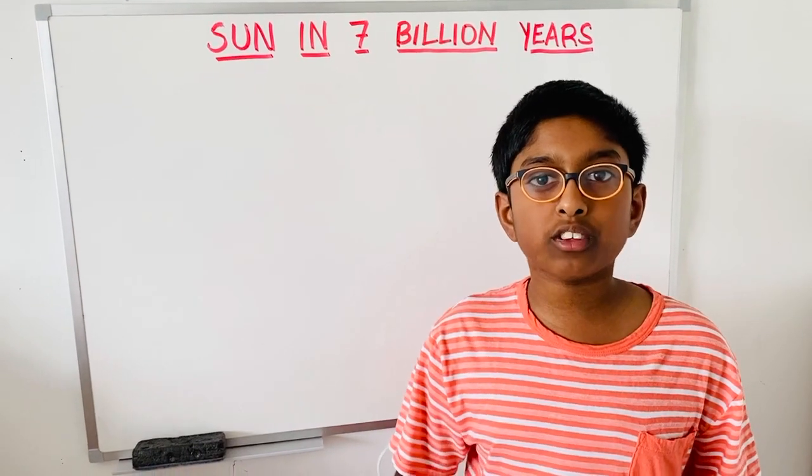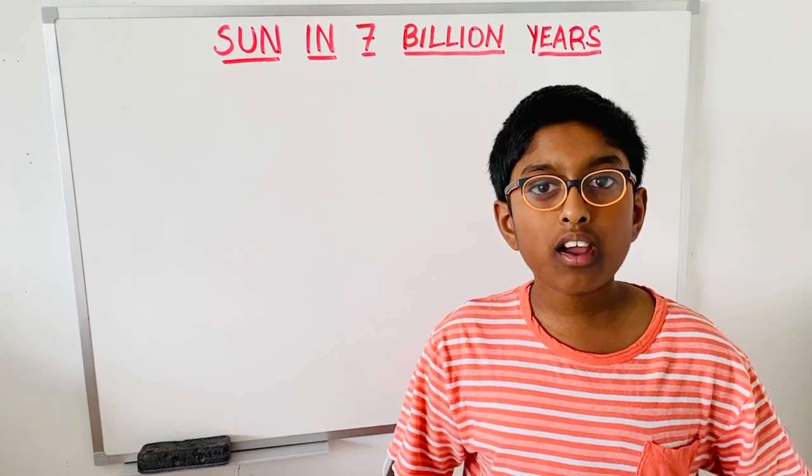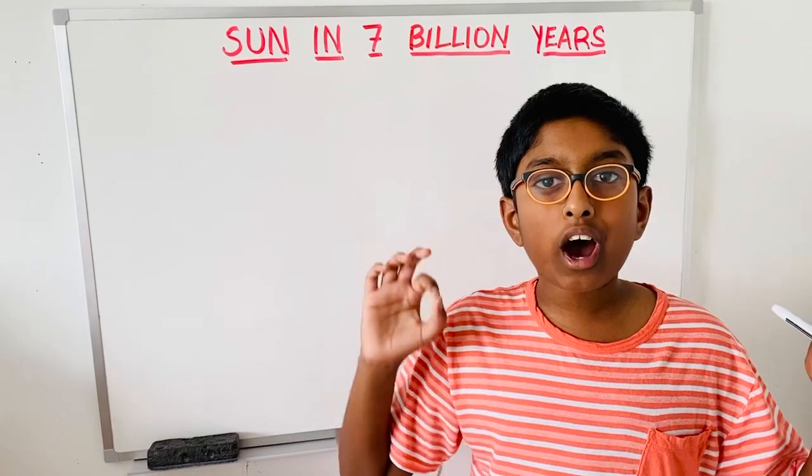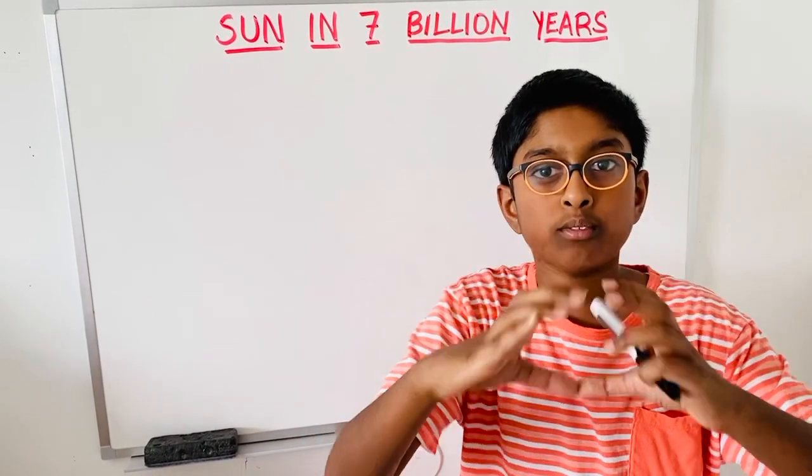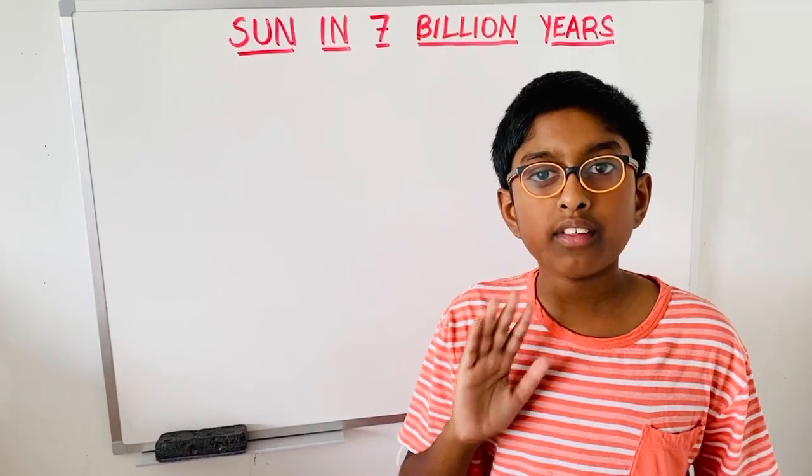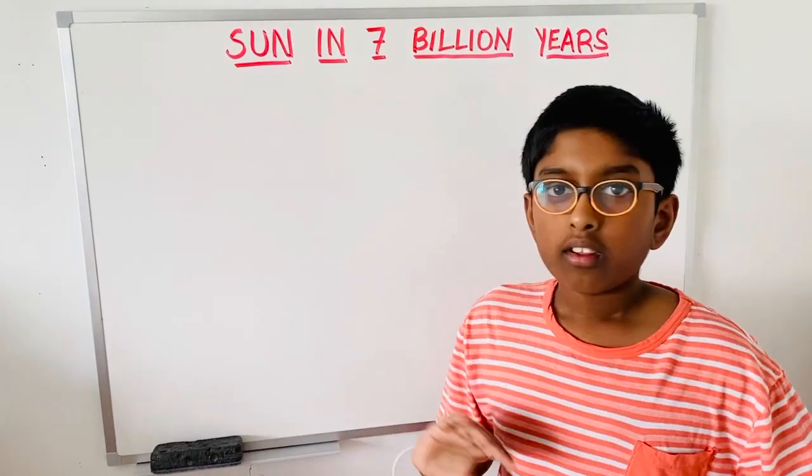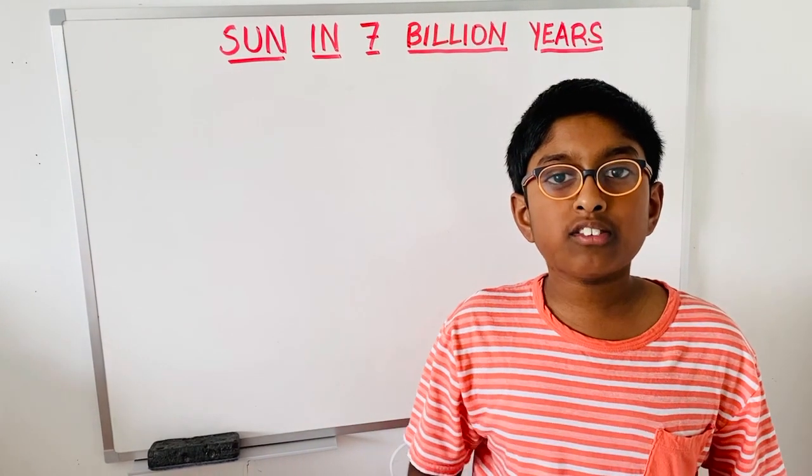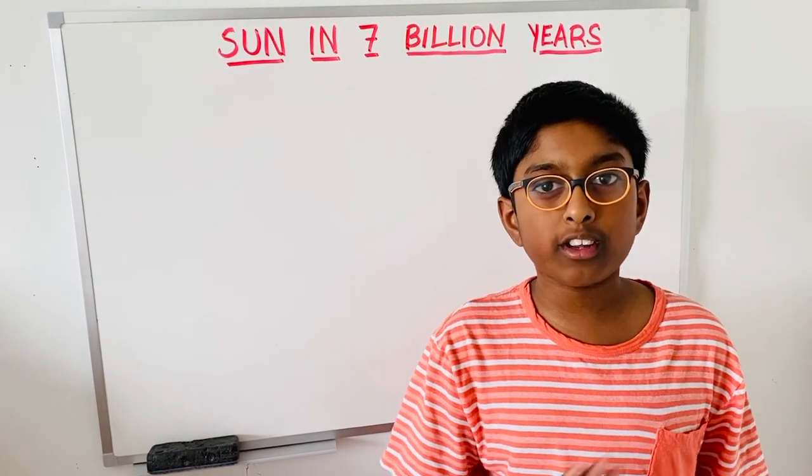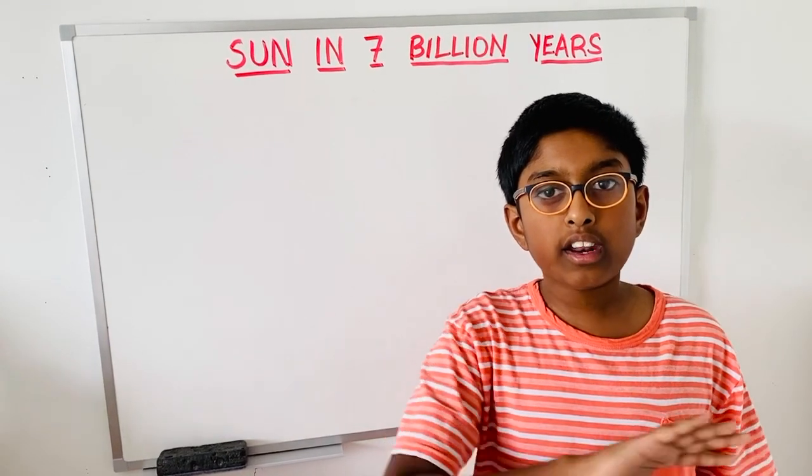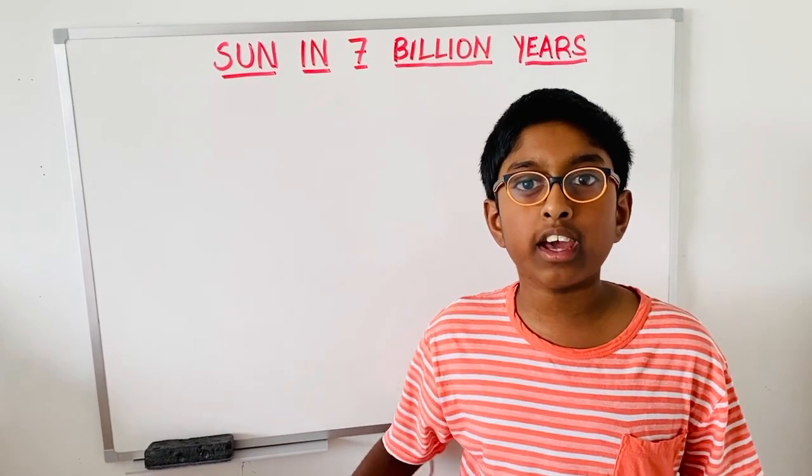4 billion years ago, the sun was formed. And also, rocks and dust combined to form the earth. And then, in 1 billion years, the sun's luminosity will increase by 10%. And it will get hotter and hotter every day.